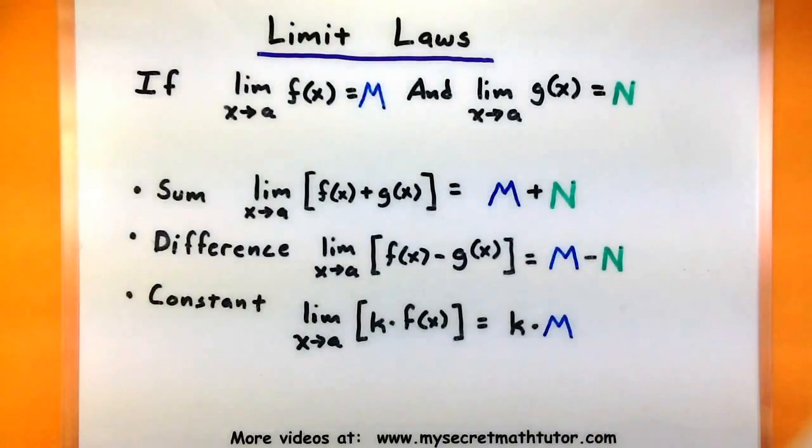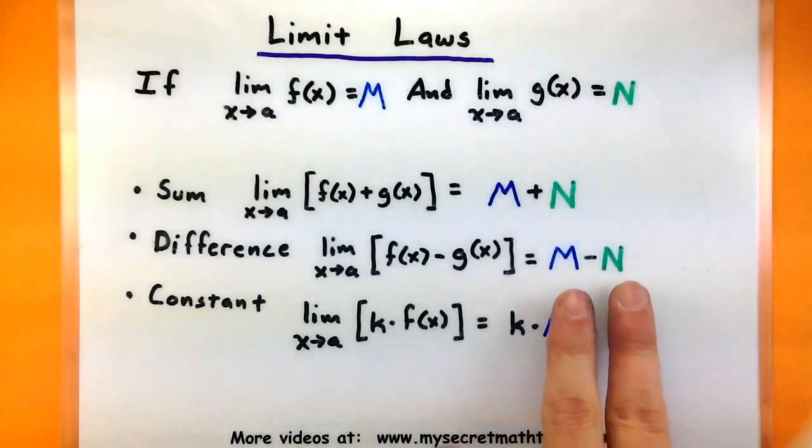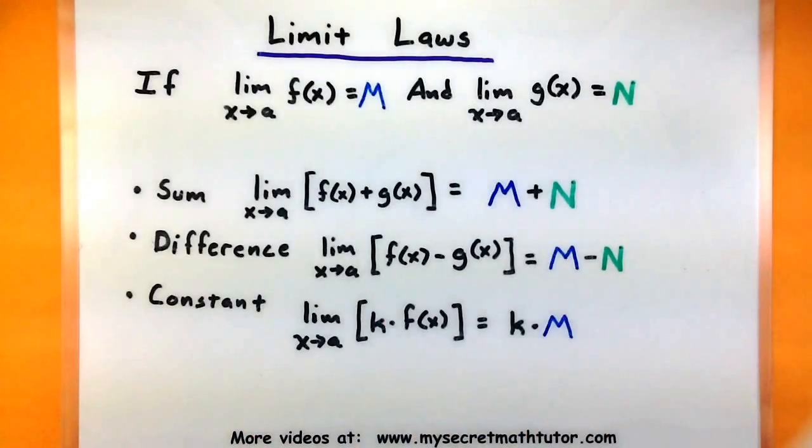In much the same way, if I take the two functions and subtract them, and I want to know about that limit, then all I have to do is subtract the limits. And the last one says if I have a function multiplied by a constant and I'm looking for its limit, then I simply multiply the limit of the function by k.